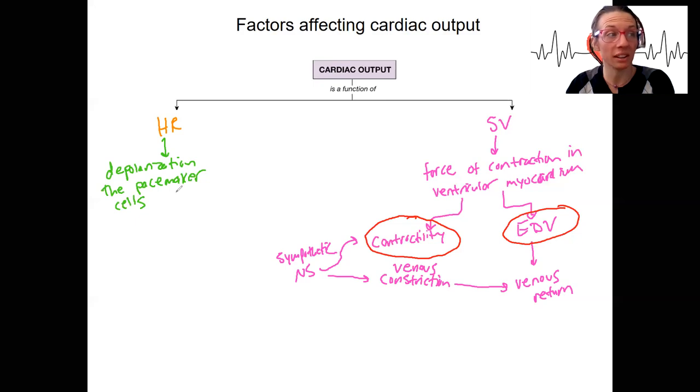Depolarization rates can be regulated, right? So we could have a decrease due to parasympathetic. Actually, let me reverse the order by that arrow. This could be regulated by the parasympathetic nervous system or the sympathetic nervous system.